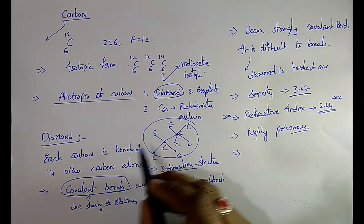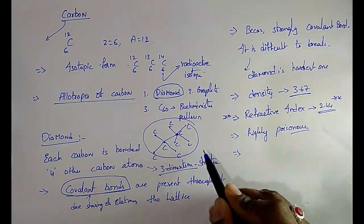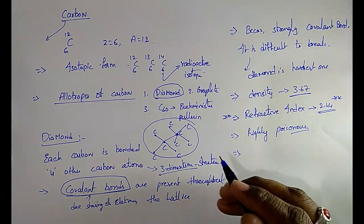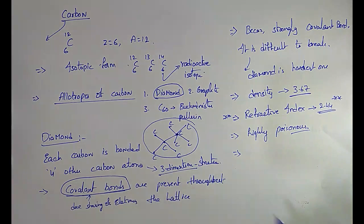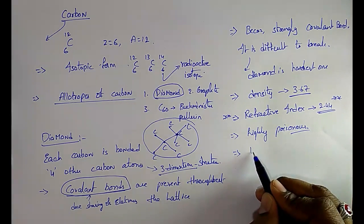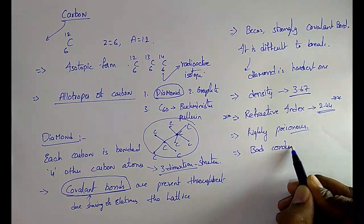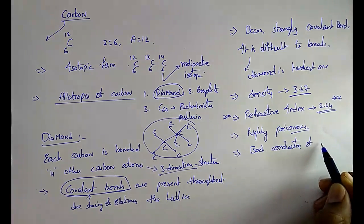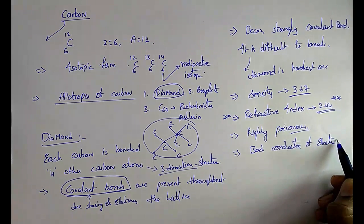Due to the strong bonds in diamond, there are no free electrons. Because of the absence of free electrons, diamond is a very bad conductor of electricity.